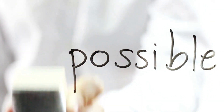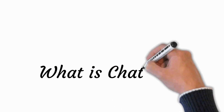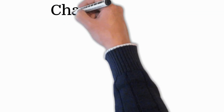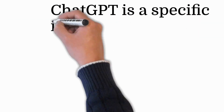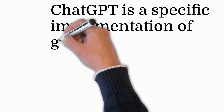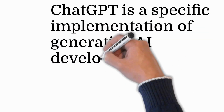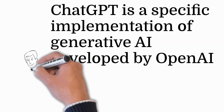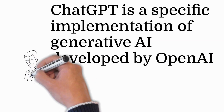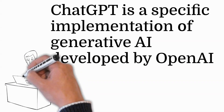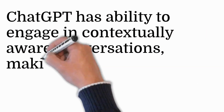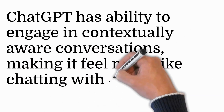What is ChatGPT? Where does ChatGPT fit into all of this? ChatGPT is a specific implementation of generative AI developed by OpenAI. It's designed to understand and generate human-like text based on the prompts it receives. This means you can have conversations with it, ask questions, or even get assistance with writing and brainstorming. What makes ChatGPT special is its ability to engage in contextually aware conversations, making it feel more like chatting with a person than a machine.